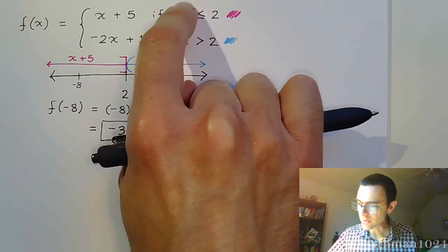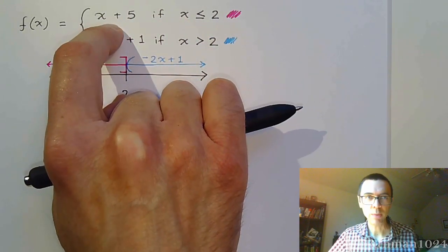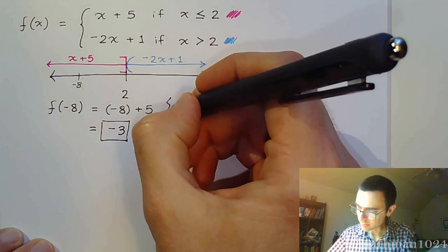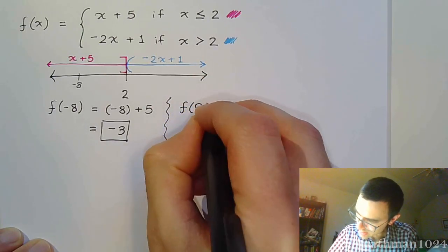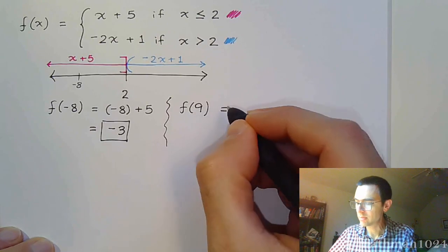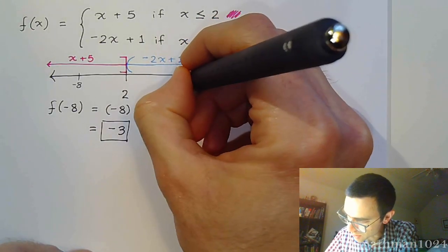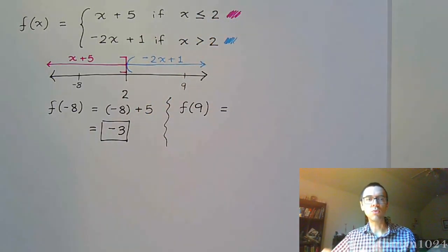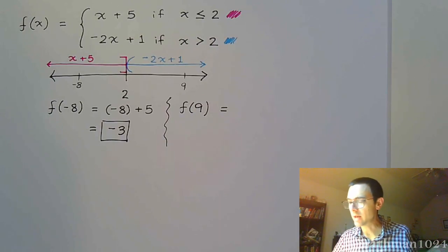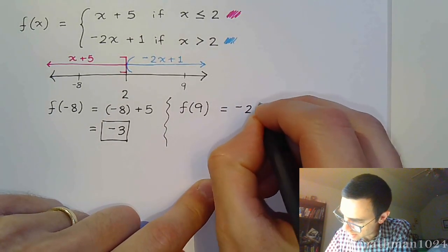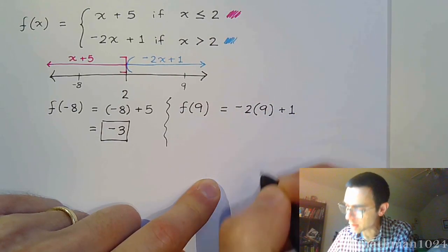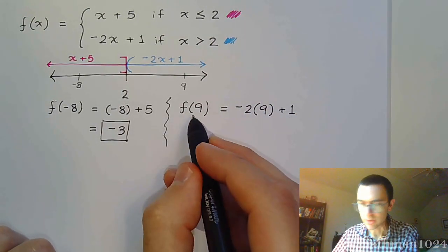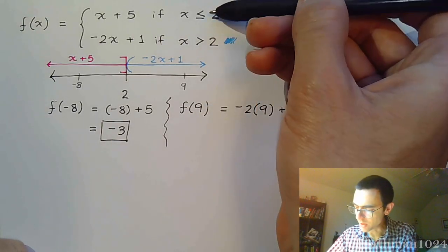If we do f(9), 9 on the number line falls over here underneath the realm of the blue piece that we have. So we're going to see -2 times—we're plugging in 9—plus 1.